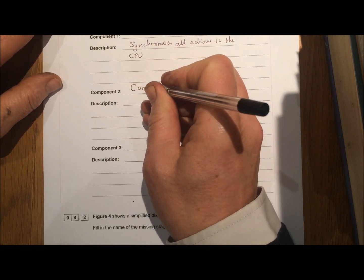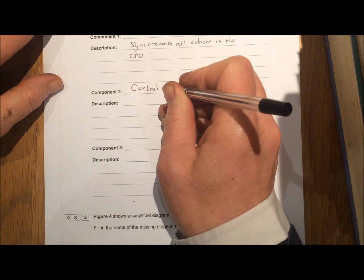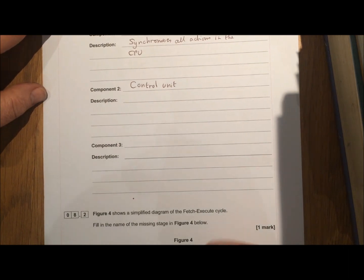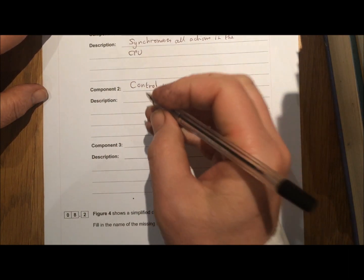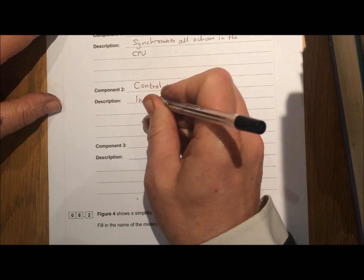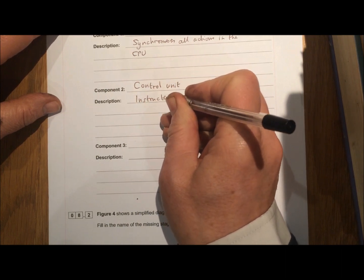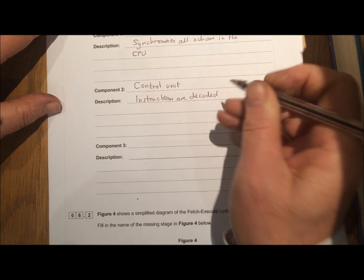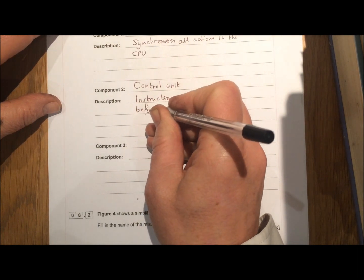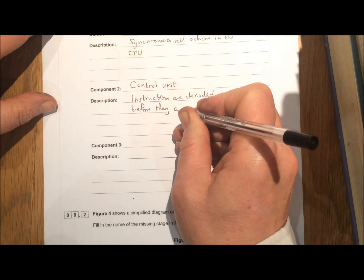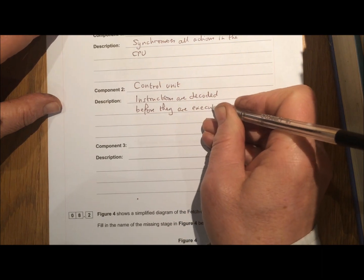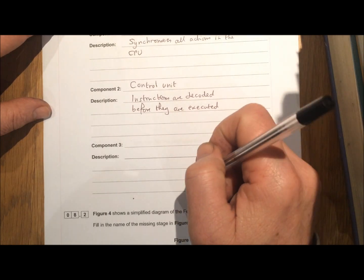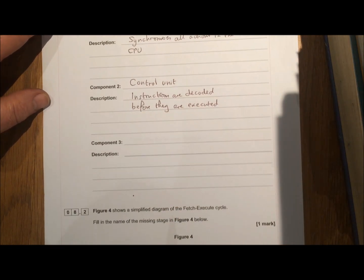Control unit. So the control unit is, as it were, the central brain of the brain of the computer. So that's where instructions are decoded before they are executed. So the control unit is the central hub of the CPU. And it's where the instructions as to what the computer will do are contained.